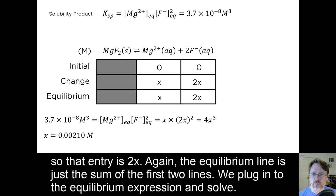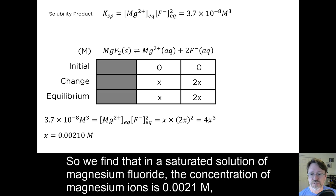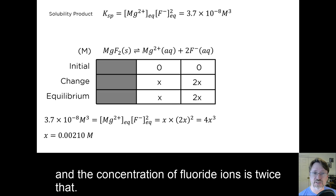We plug it into the equilibrium expression and solve. This one is easier because we don't need the quadratic formula. So we find that in a saturated solution of magnesium fluoride, the concentration of magnesium ions is 0.0021 molar, and the concentration of fluoride ions is twice that.